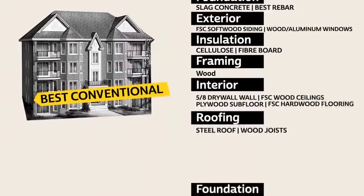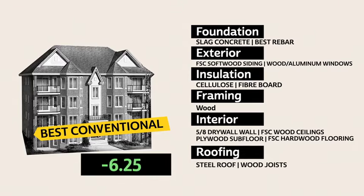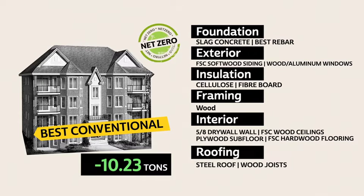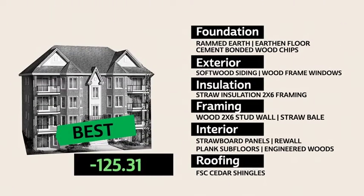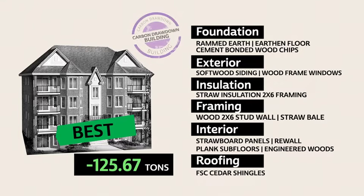But we could make even better choices using commonly available code-compliant materials and get the carbon footprint down so that our building actually stores 10 tons of carbon and has no net emissions — a real zero carbon building. By using the best possible material selections, we can see this same building storing 125 tons of carbon. This is a real carbon drawdown building.